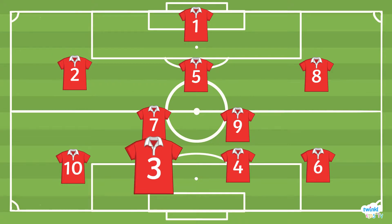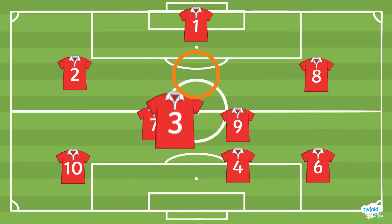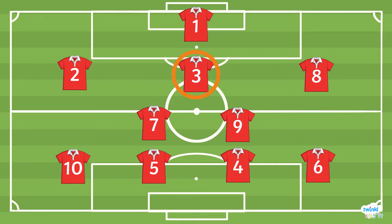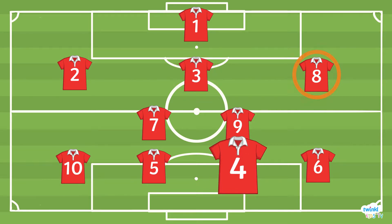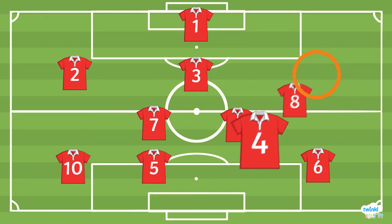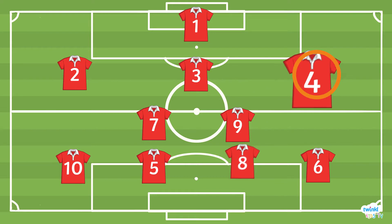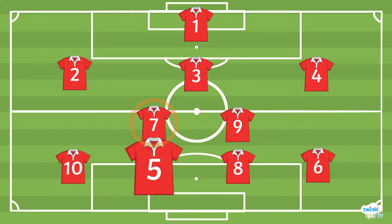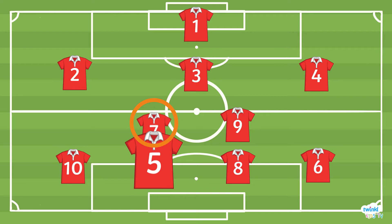The next number in the number line is 3, so we need to swap number 3 with number 5. It's number 4's turn. Let's change that with number 8. Our next number that is greater than 4 is 5.